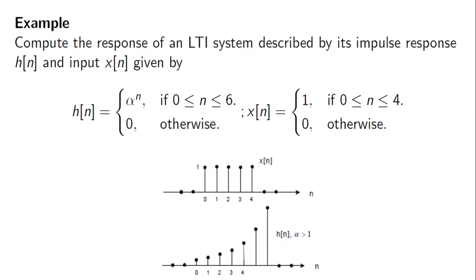In this example of discrete-time convolution, we are given an input x[n] which has a value of 1 from n=0 to n=4, and an impulse response h[n] giving a value of α^n from n=0 to n=6. We are asked to compute the output y[n].